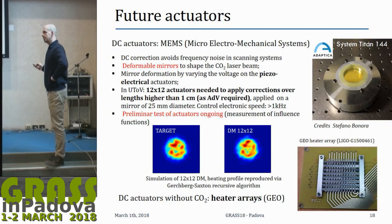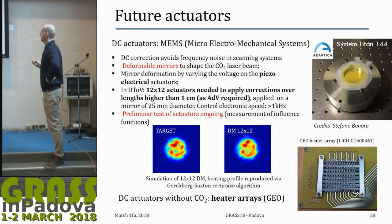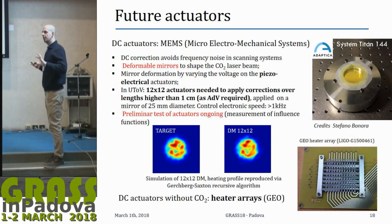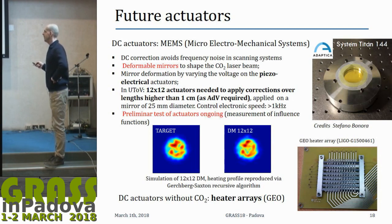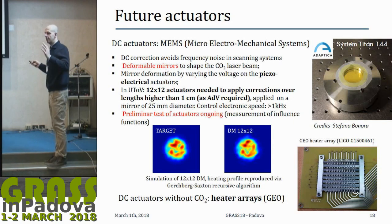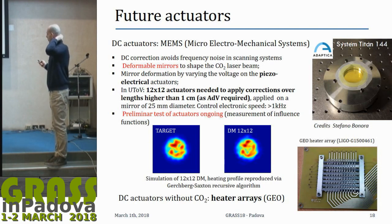Future actuators are foreseen in this perspective. To remove frequency noise delivered by the scanning system into the detector sensitivity band, we can think about DC actuators without any frequency dependence — for instance, a deformable mirror to shape the CO2 beam to get the proper heating profile on the compensation plate. At the University of Tor Vergata, we purchased from ADAPTICA a 12×12 actuator deformable mirror system, sufficient to correct defects on the compensation plate at the one-centimeter length scale required for Advanced Virgo. We are currently testing it and finding the influence functions of all the actuators.